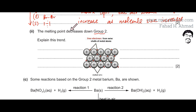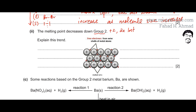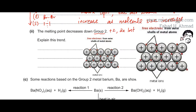As you move down group 2, all metal ions have a charge of +2 and each atom contributes two delocalized electrons. This applies throughout group 2, whether it's barium, calcium, or magnesium — the ion is always +2. The key difference moving down the group is that the size of the ion becomes bigger, as atomic radius increases with more shells.